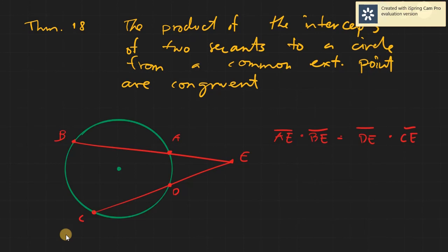Today we will be discussing Theorem number 18. We're nearing the end. The theorem number 18 being the product of the intercepts of two secants to a circle from a common external point are congruent.